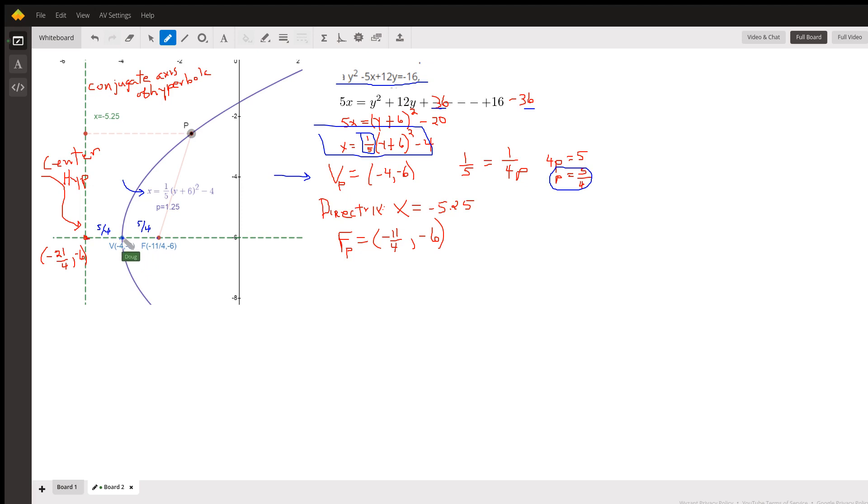There it is, and then the focus is on the interior of the parabola. So if we add 5 fourths to negative 4, we get negative 11 fourths, or negative 2.75.